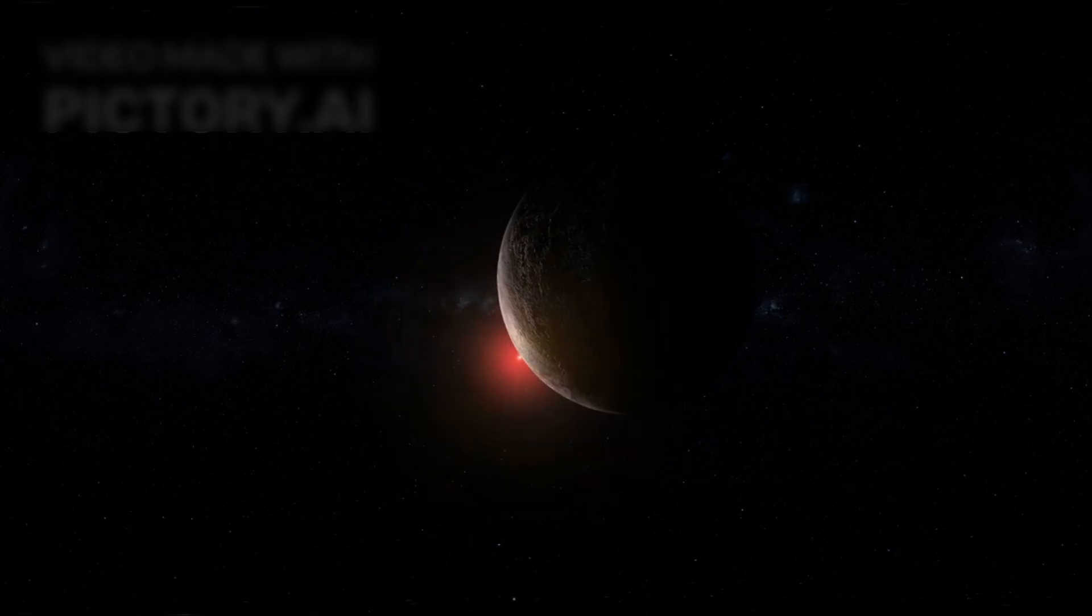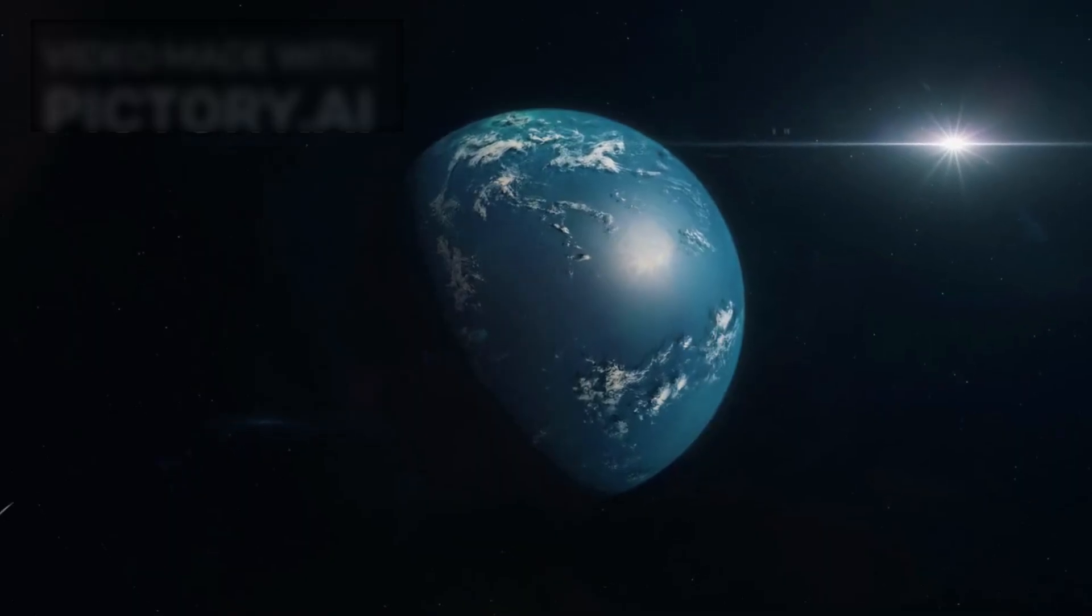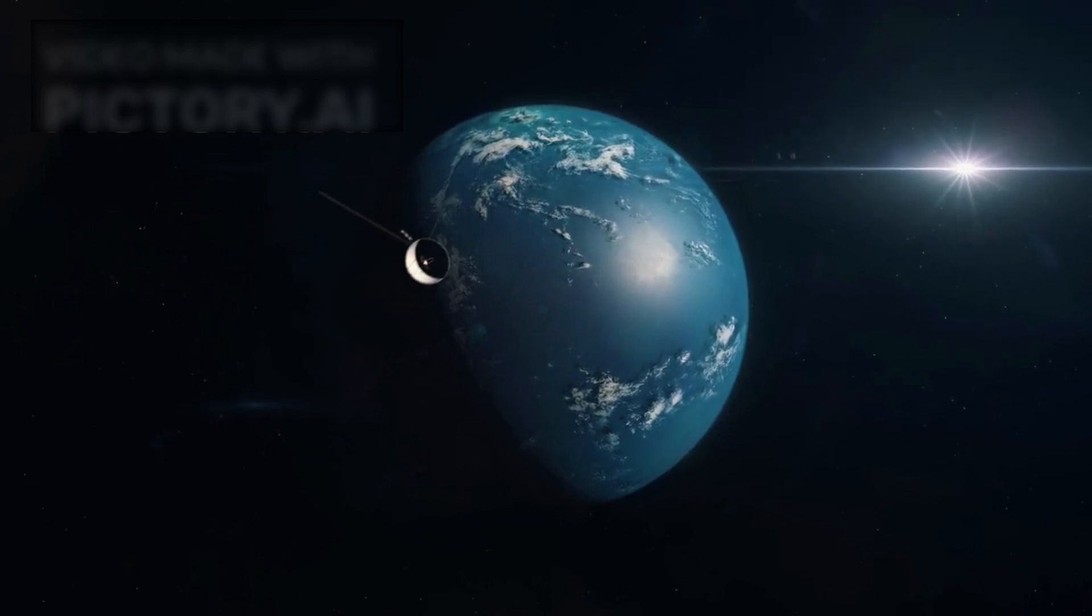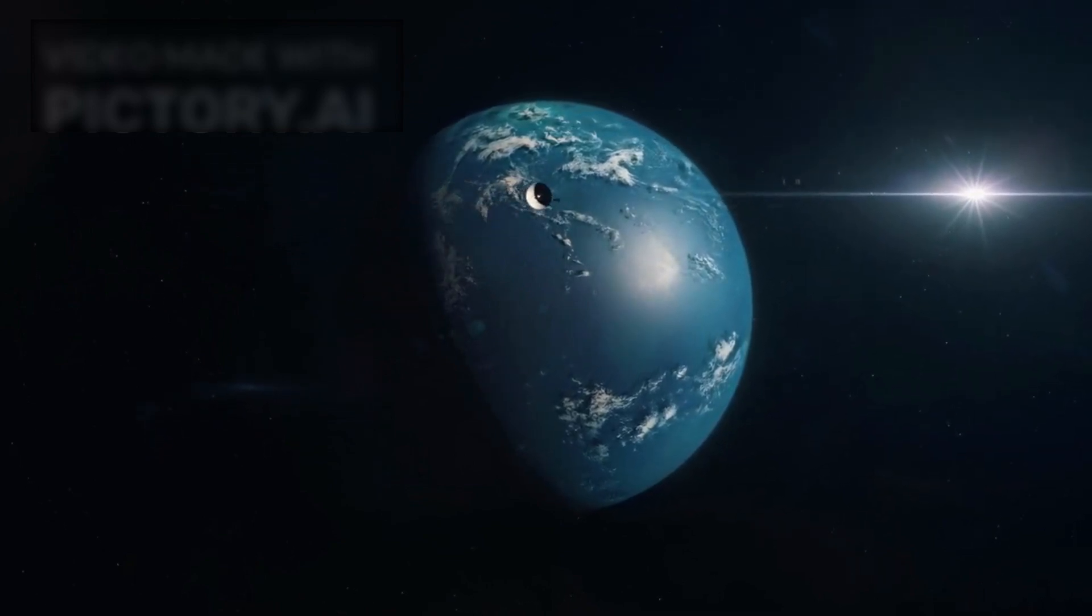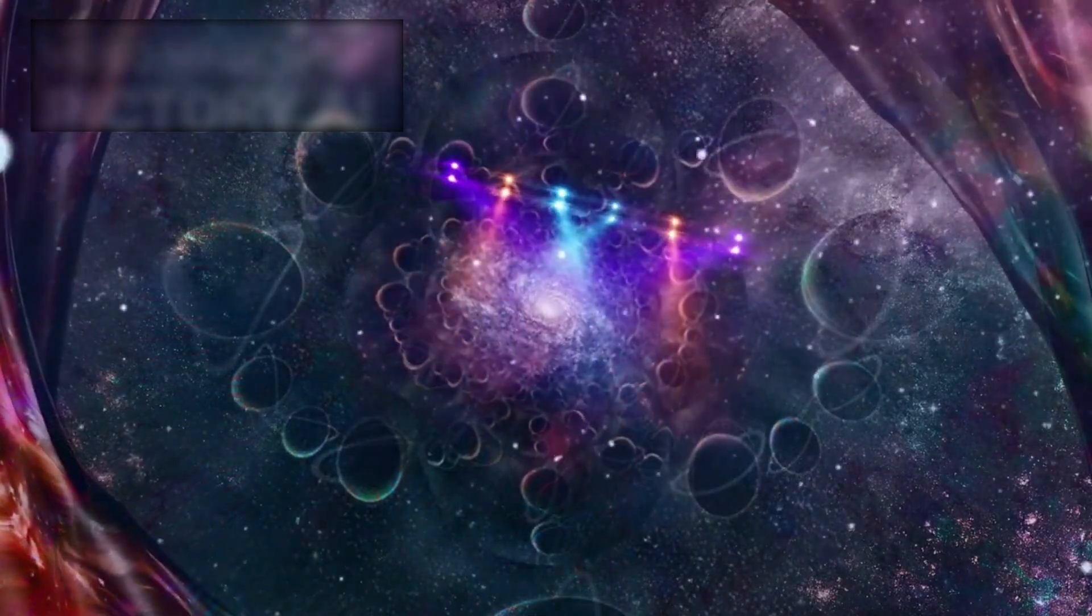From 4.2 light years away, nestled within the Proxima Centauri system, a planet known as Proxima b has been quietly orbiting its red dwarf star. Until recently, it was simply one of many exoplanets categorized as potentially habitable, but then came a signal. A glimmer. A persistent light where there shouldn't be one.